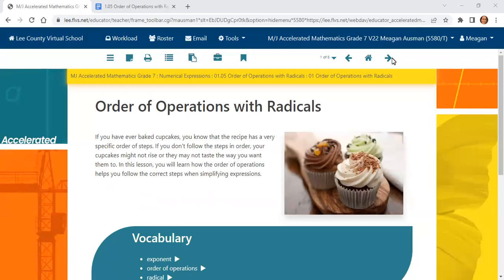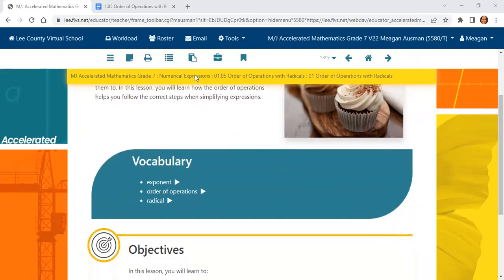Alright, hello everybody. Today we're going to review order of operations with radicals. If you're taking this for seventh grade advanced, this is your lesson 1.05. If you're taking this for pre-algebra, this is your lesson 1.03. It is the same material, just in two different courses. So let's go ahead and get started with radicals.